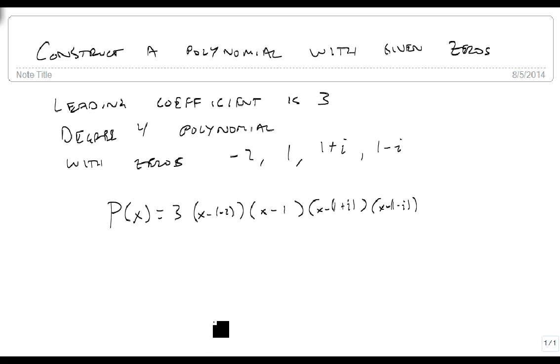And so this is our function. We're almost ready. What we need to do is multiply this out and evaluate everything. So we get 3 times x plus 2, x minus 1, and I'm going to rewrite this as x minus 1 minus i, and x minus 1 plus i.